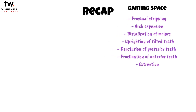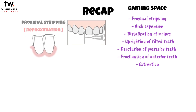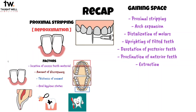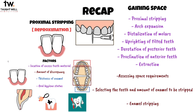That's it for this video. Let's recap. Methods of gaining space in orthodontics include proximal stripping, arch expansion, derotation of teeth, and extraction. Proximal stripping, also known as reproximation, is a method used to create space by selectively reducing the width of certain teeth. The teeth chosen depend on the location of excess tooth material, the amount of discrepancy, the thickness of enamel, and the caries or oral hygiene status of the patient. The procedure involves three steps: assessing space requirements, selecting the teeth and amount of enamel to be stripped, and enamel stripping.